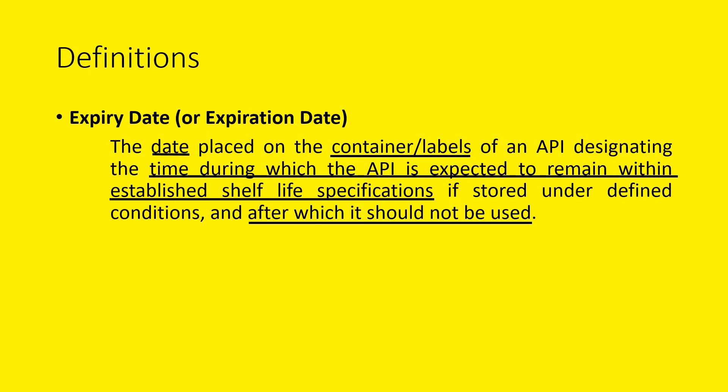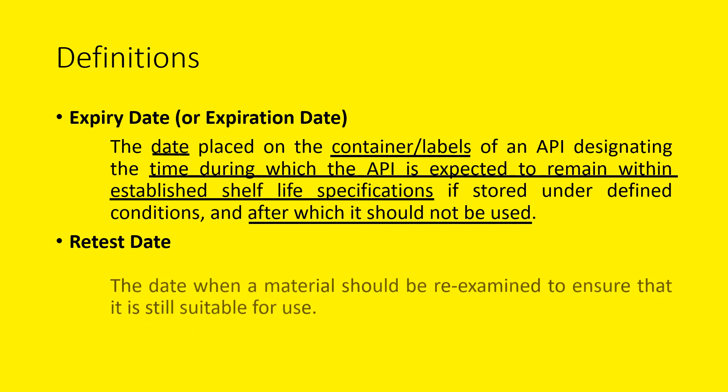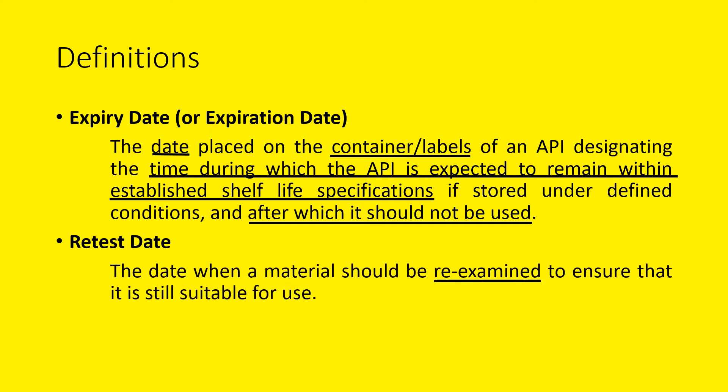Let us see what is the meaning of retest date. The retest date is the date when a material should be re-examined to ensure that it is still suitable for use. That means you have to confirm that the material after the retest period is tested once again — that is called the retest. It is tested once again to confirm that it is still usable for further processing.